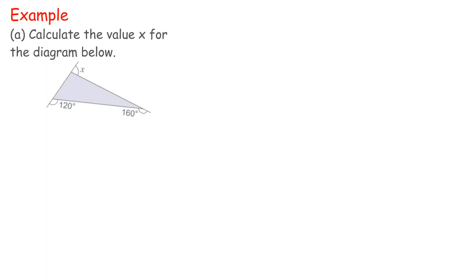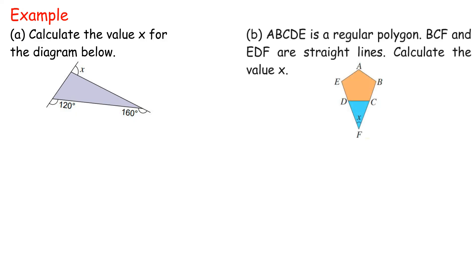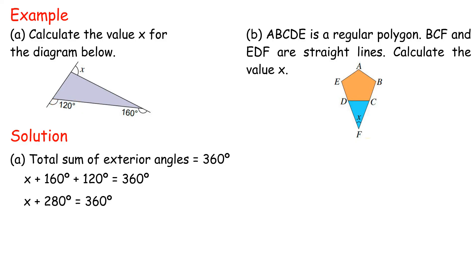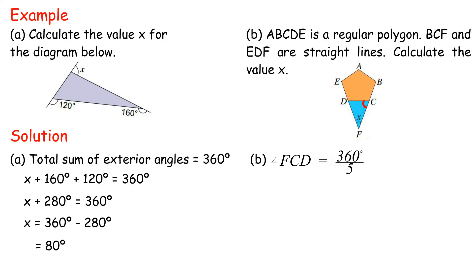Example A: Calculate the value of x. Total sum of exterior angles equals 360 degrees. X plus 160 degrees plus 120 degrees equals 360 degrees. X plus 280 degrees equals 360 degrees. X equals 80 degrees. Example B: ABCDE is a regular polygon; BCF and EDF are straight lines. Calculate the value of x. Exterior angle equals 360 degrees divided by 5, equals 72 degrees. X equals 180 degrees minus 72 degrees minus 72 degrees, equals 36 degrees.